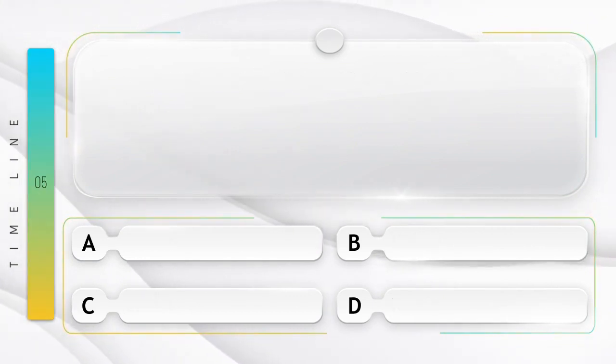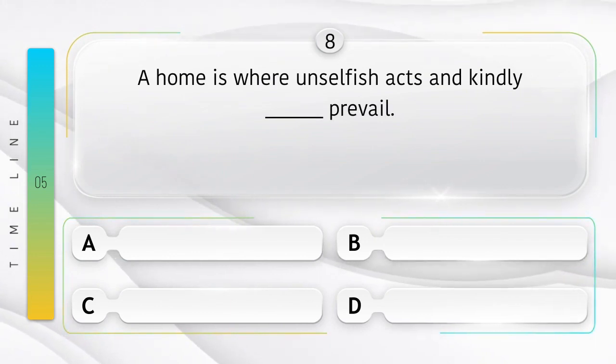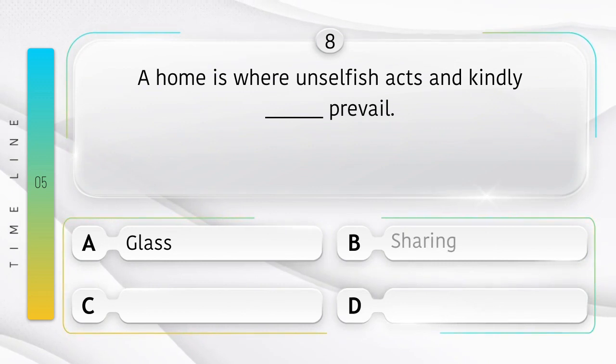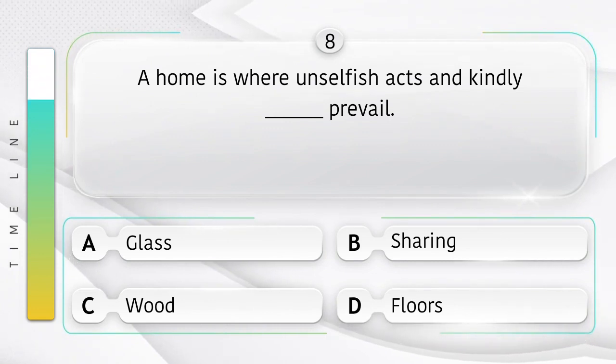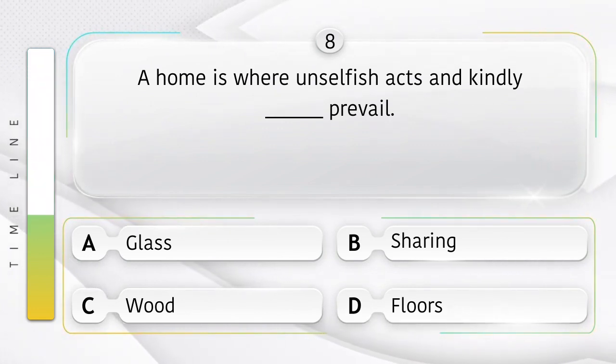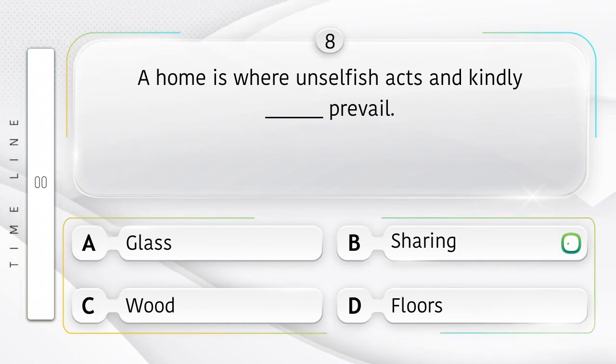A home is where unselfish acts and kindly blank prevail. Options are A. Glass, B. Sharing, C. Wood, D. Floors. Answer is option B, Sharing.